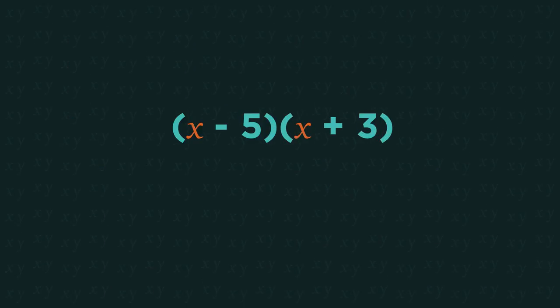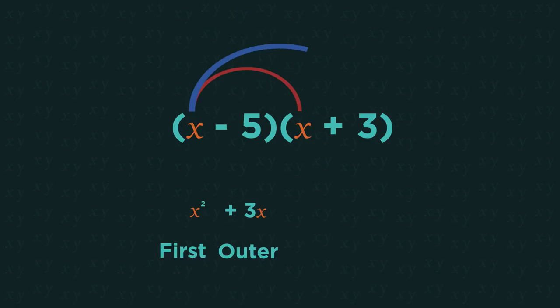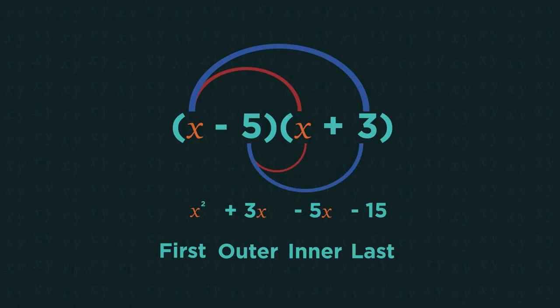For the first method, we draw arcs linking each term. So x multiplied by x is x squared, x multiplied by 3 is 3x, negative 5 multiplied by x is negative 5x, and negative 5 multiplied by positive 3 is negative 15. See how I've ended up with 4 arcs? That's really important because it means I haven't missed anything out.